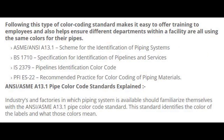Following this type of color coding standard makes it easy to offer training to employees and also helps ensure different departments within a facility are all using the same colors for their pipes. Key standards include: ASME and ANSI A13.1 — Scheme for the identification of piping systems; BS 1710 — Specification for identification of pipelines and services; IS 2379-4 — Pipelines identification color code; and PFIES 22 — Recommended practice for color coding of piping materials.